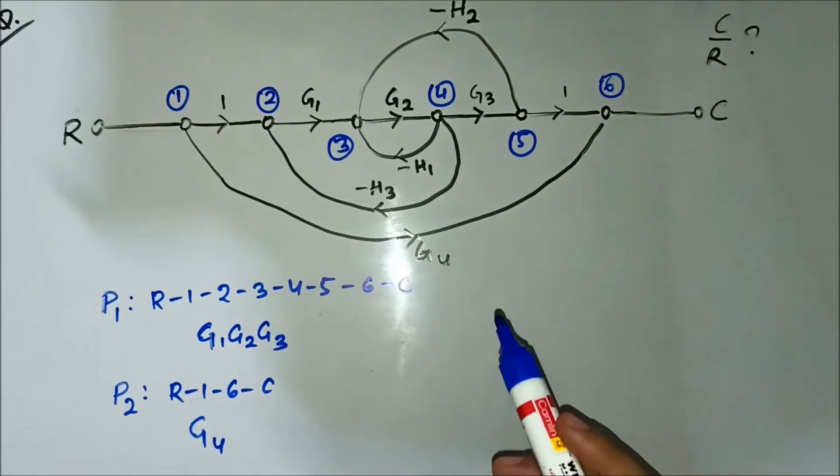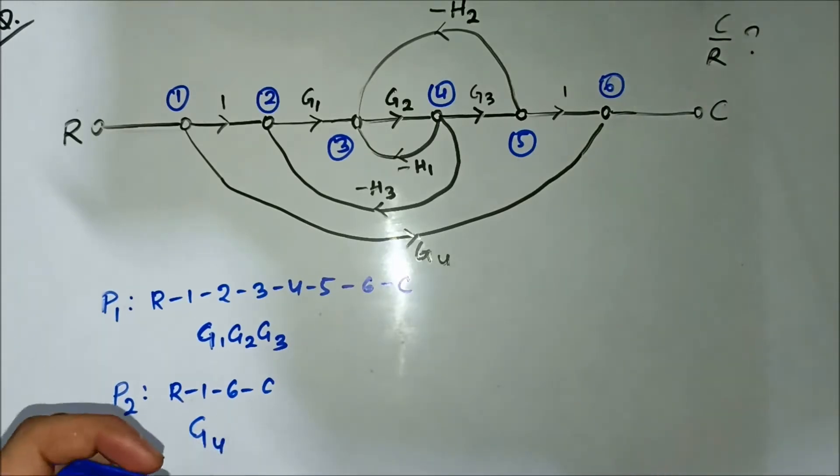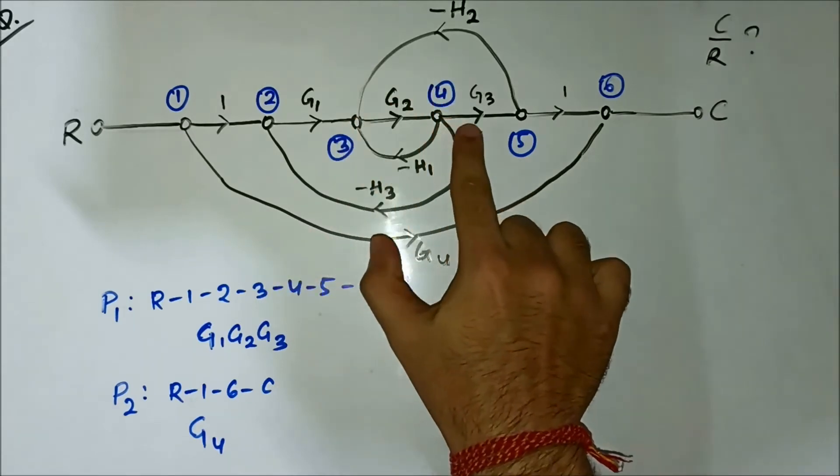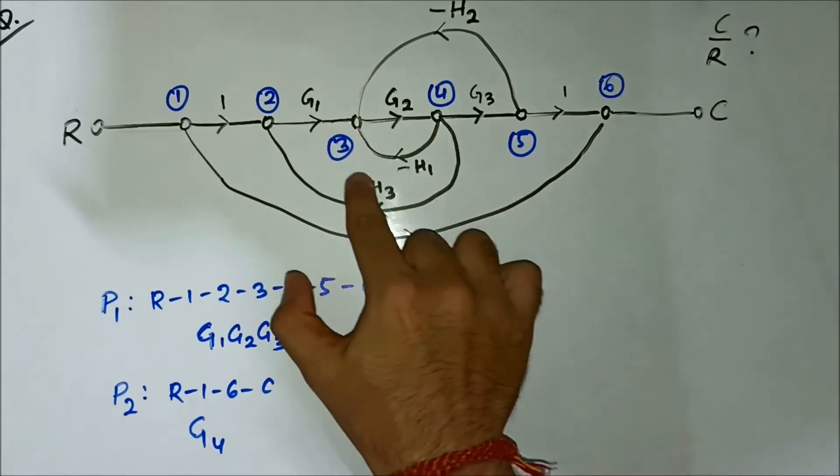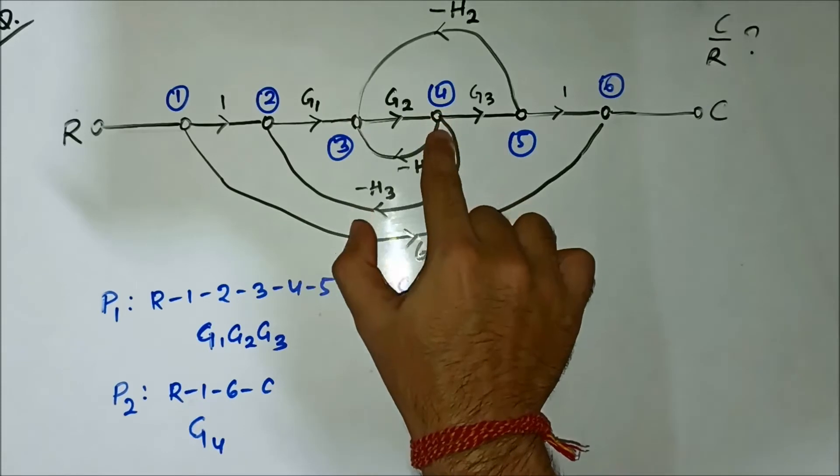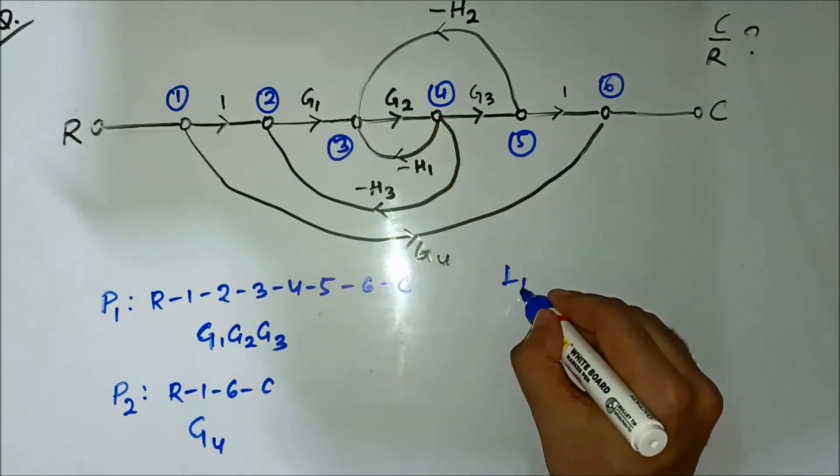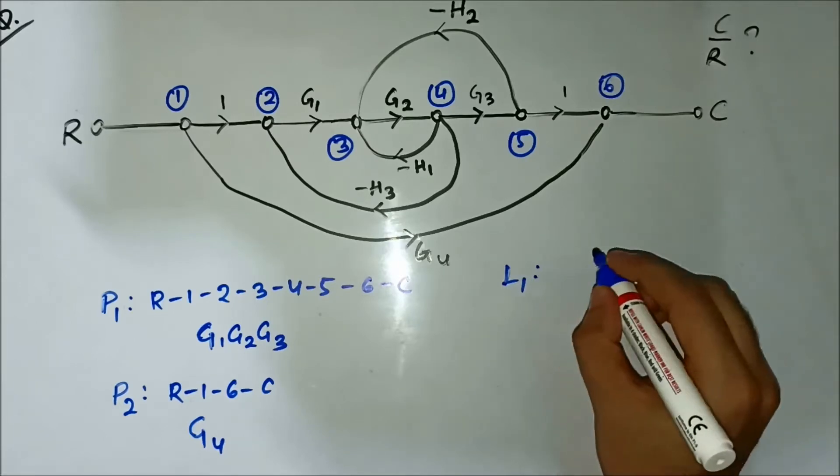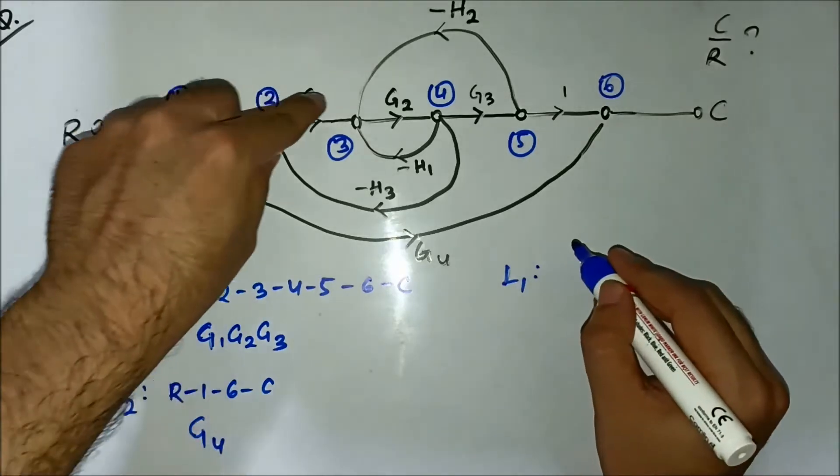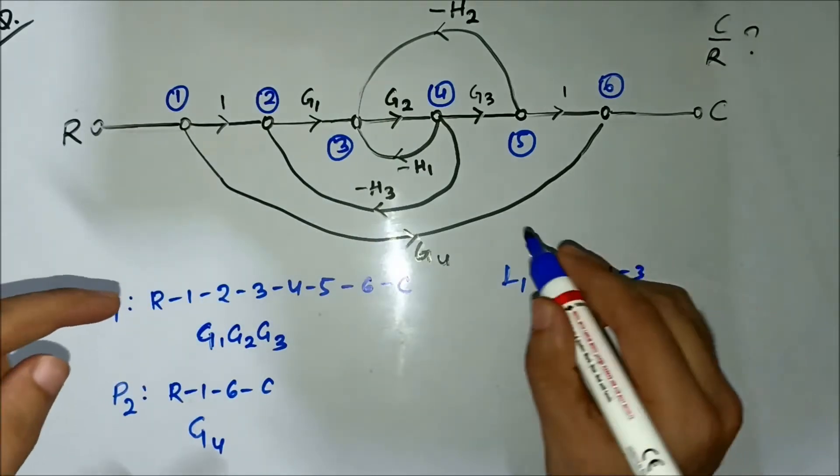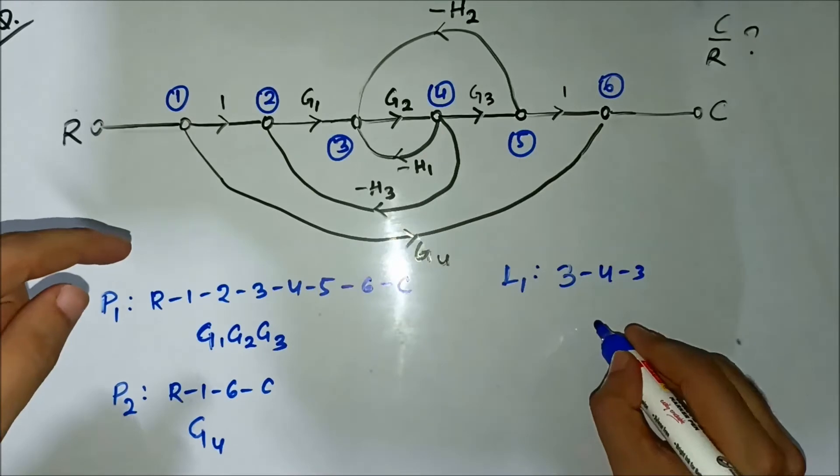Now the loops. If you see, one of the loops is 3-4-3. That is one of the loops - starting and ending at the same node without any node repeated. 3-4-3 and the gain is minus g2h1.